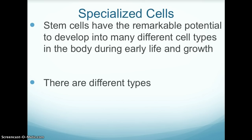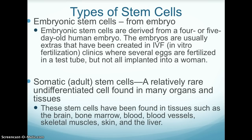Stem cells are also specialized cells. Stem cells have the remarkable potential to develop into many different cell types in the body during early life and growth. There are different types of stem cells. Embryonic stem cells are derived from a 4 or 5 day old human embryo. These embryos are usually extras created in IVF, or in vitro fertilization clinics, where several eggs are fertilized in a test tube but not all are implanted into a woman.